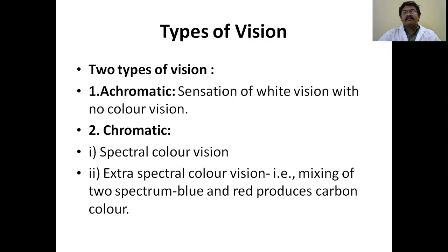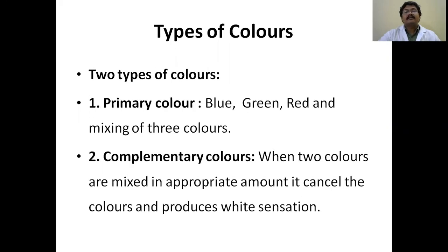There are two types of vision: achromatic, which is the sensation of white vision with no color, and chromatic, which includes spectral color vision and extra-spectral color vision. Extra-spectral color vision results from mixing two spectra — for example, blue and red produce a dark color. There are also two types of colors: primary colors — blue, green, red — and complementary colors, where two colors mixed in appropriate amounts cancel each other and produce a white sensation.